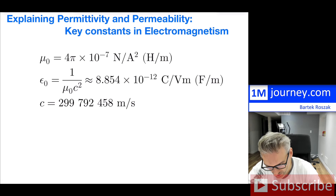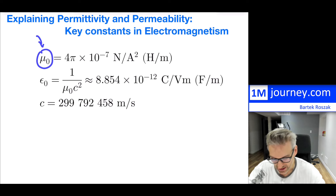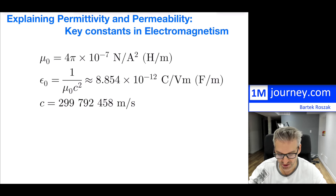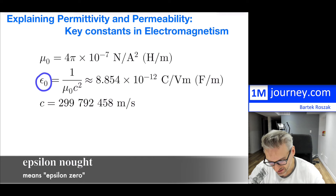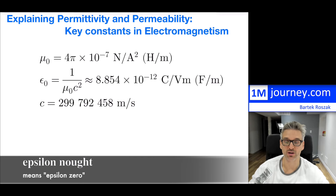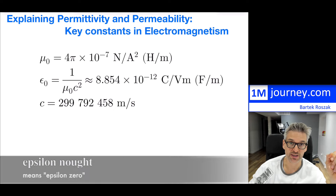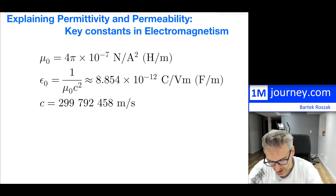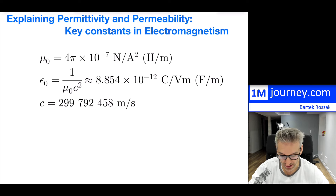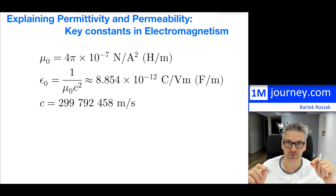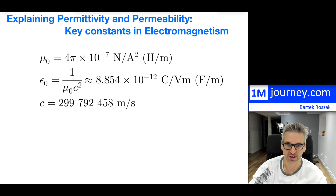You will notice that you have two of these. The first one, which is mu naught, is the permeability constant and it is related to the magnetic field side. Then you have the permittivity constant, which is epsilon naught, and that one is related to the electric field. These two constants are constants of nature — we can find them through experimentation and computation. The actual numbers are listed, and if you do enough problems you'll start remembering them, but it's not necessary to understand what these concepts actually mean.